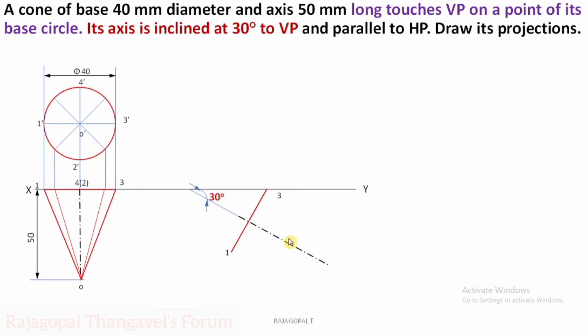Now complete the entire top view with respect to the axis inclination of 30 degrees to VP — just reproduce the same triangle here.